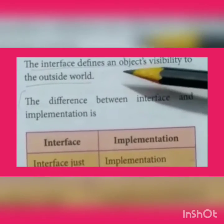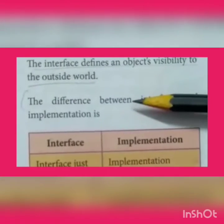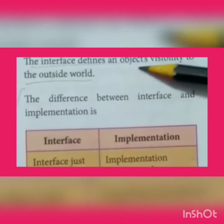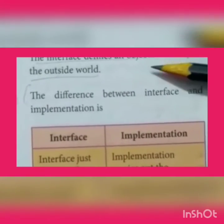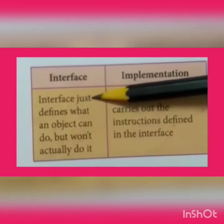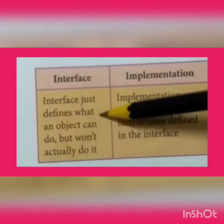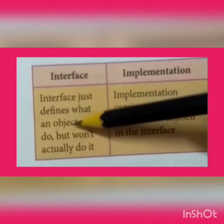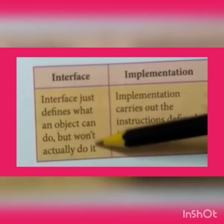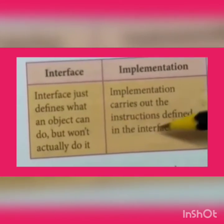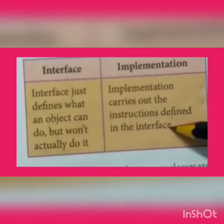When we switch on the light, the power and electricity will be activated and considered as an object. The interface just defines what an object can do — it will not be executed by itself. It specifies what to do, whereas the implementation of the interface will actually be implemented.